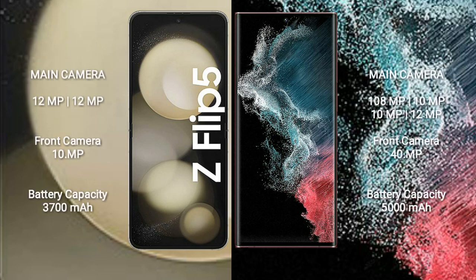The Samsung Galaxy Z Flip 5 features a rear dual-camera setup with 12MP plus 12MP, and a 10MP front camera. The Samsung Galaxy S22 Ultra features a rear quad-camera setup with 108MP plus 10MP plus 10MP plus 12MP, and a 40MP front camera.